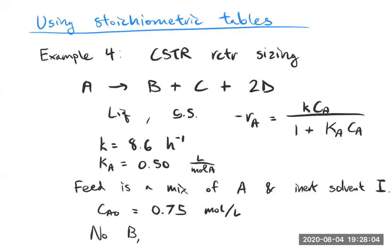We're going to have no B, C, or D in the feed. Try not to be completely unreasonable with this problem. I'm going to switch the page now to allow for continuing to write the prompt. We're going to have a volumetric flow rate of the feed, and that's going to be a thousand liters per hour.